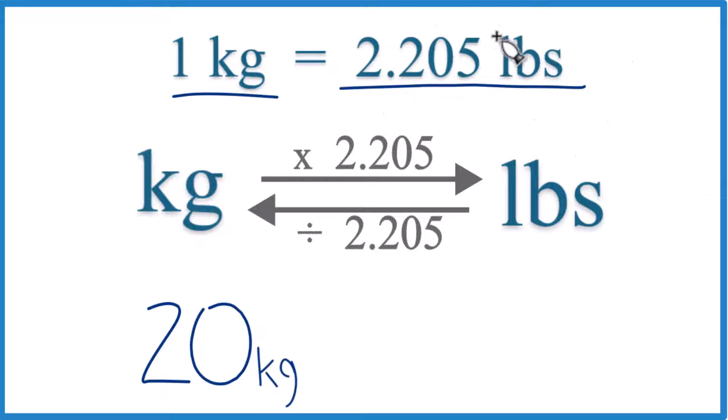So 20 kilograms is going to be 20 times this number. But if you look at this, we can see that whenever you're going from kilograms to pounds, you multiply by 2.205. And if you're going from pounds to kilograms, you divide.